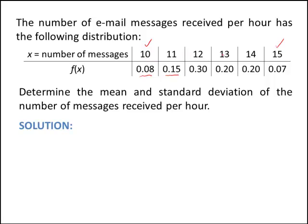So for the values of x that have probabilities, we certainly hope that this sums to 1. So you can check 0.08 plus 0.15, if you sum across, the sum is going to be 1. So it is a valid probability mass function. What we'd like to do now is compute the mean or the expected value of the number of messages they receive per hour.